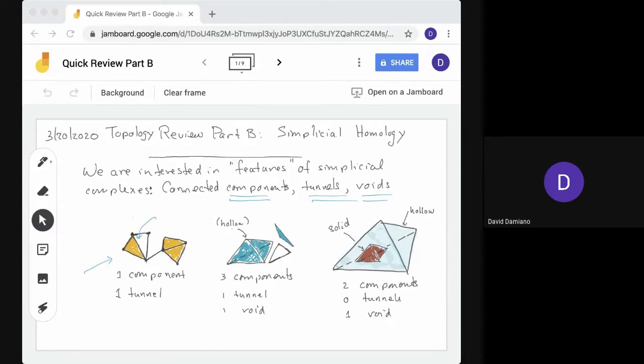In the second example, we see three connected components. There's a hollow tetrahedron, so the boundary of a three-simplex, the boundary of a two-simplex (the triangle), and then a two-simplex. That gives us three components. There's one tunnel. Again, the tunnel goes through the boundary of the two-simplex, and there's one void that's inside the hollow tetrahedron.